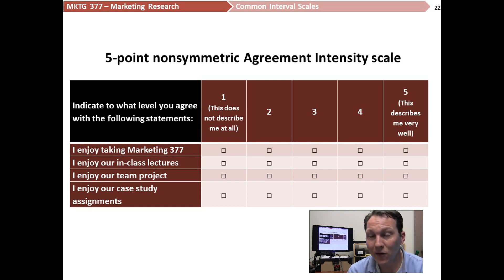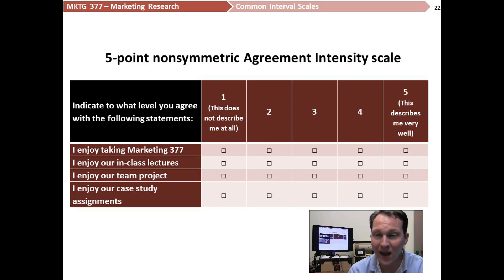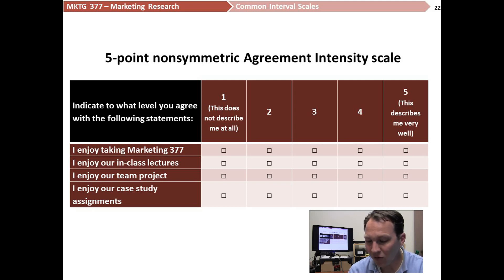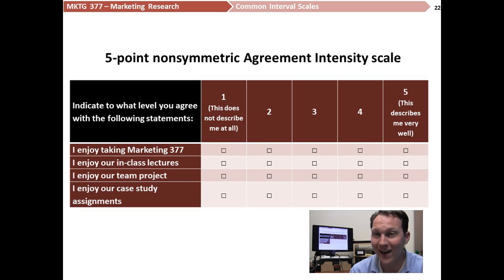The idea is that respondents can agree or disagree with statements, and I can word statements negatively — for example, 'I don't like the instructor very much' — hopefully you'd all give it a one and not a five. I could do that to make sure the pattern of responses doesn't violate the spirit of the question — that people aren't doing what's called straight-lining or yea-saying, where you just pick all the fives without really reading the questions.